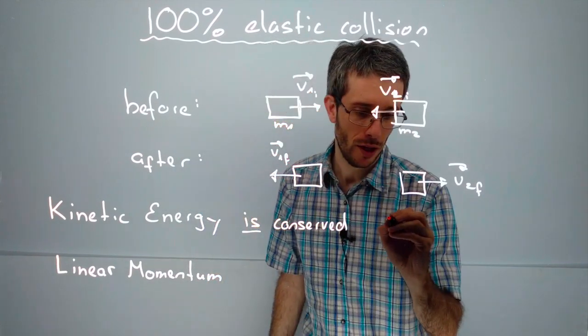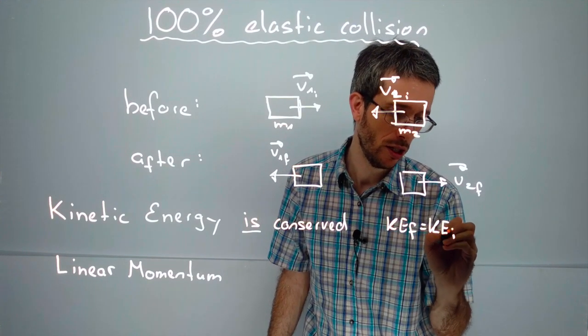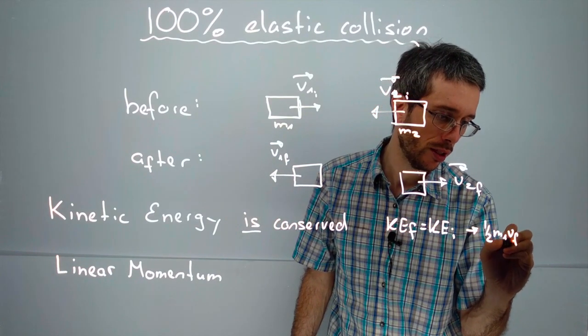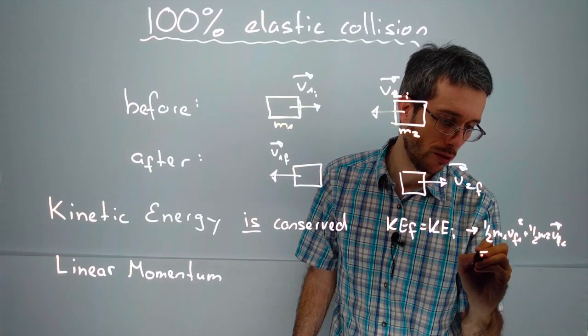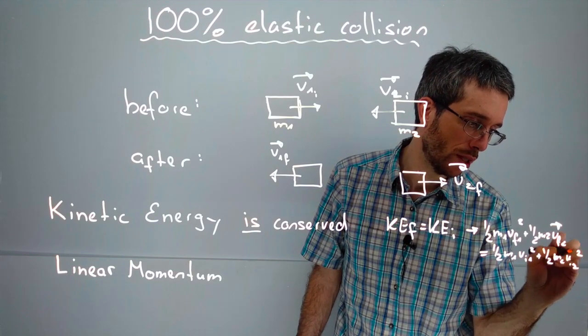So you have kinetic energy final is equal to kinetic energy initial, meaning one-half m1v final one squared plus one-half m2v final two squared is equal to one-half m1v initial one squared plus one-half m2v initial two squared.